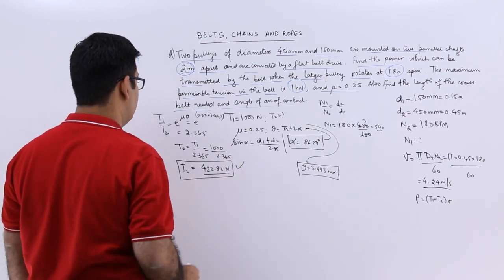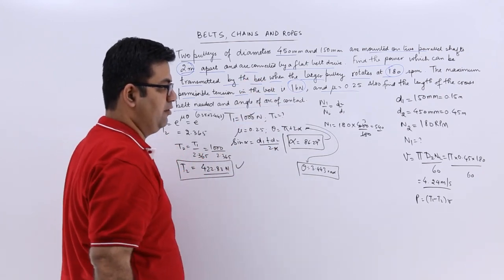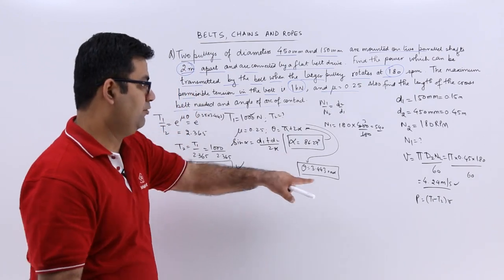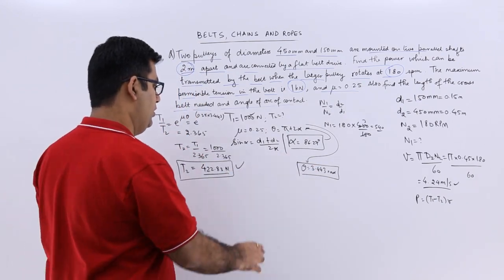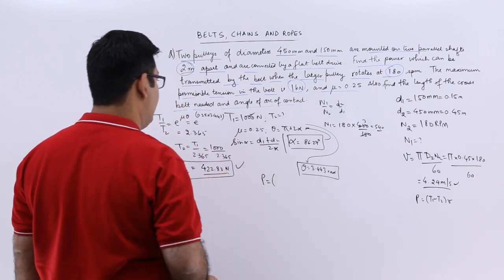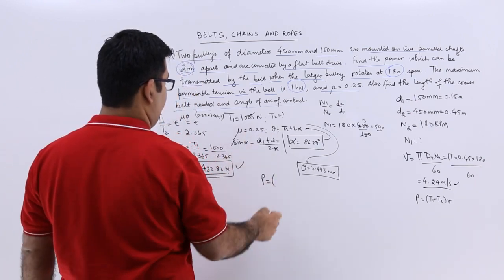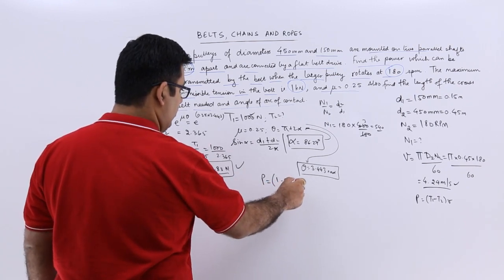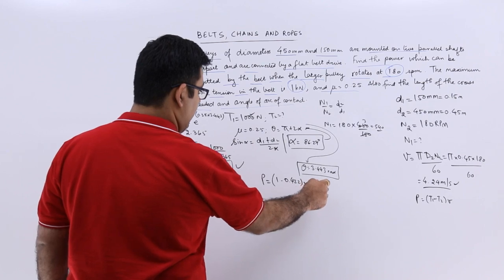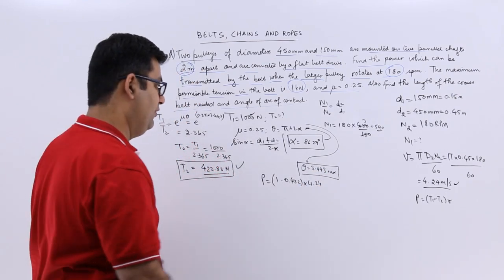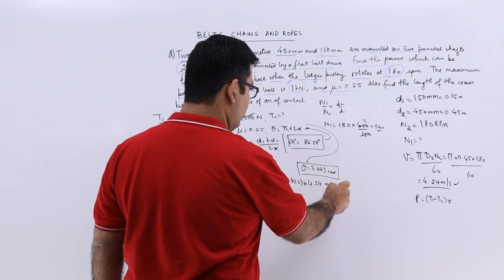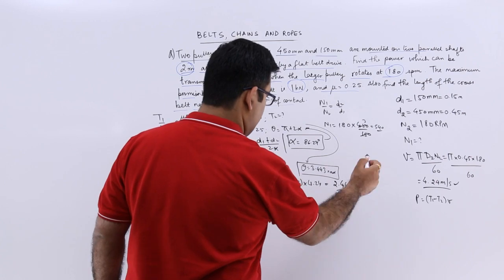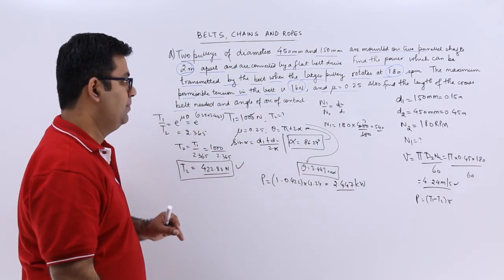T2 is known to us. T1 is known to us. We have already found out the velocity. We can use these values in that formula to calculate power. So power would be T1. Let us keep kilonewtons. So 1 minus 0.422 into 4.24. So the value would be in kilowatts which comes out to be 2.247 kilowatts. So that is the power required.